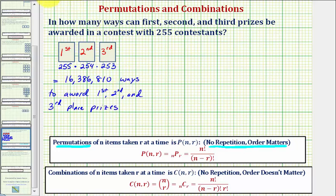But let's also solve this using a permutation. The number of ways first, second, and third place prizes can be awarded if there are 255 contestants would be equal to the number of permutations of 255 contestants taken three at a time, or 255 permute 3.